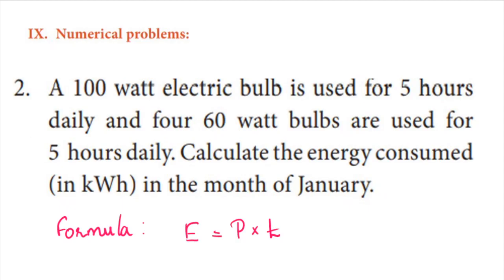Let us discuss Numerical Problem 2. A 100-watt electric bulb is used for 5 hours daily, and 4 sixty-watt bulbs are used for 5 hours daily. Calculate the energy consumed in kilowatt-hours in the month of January.